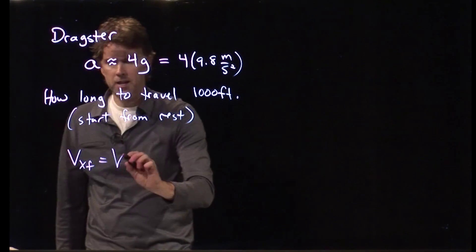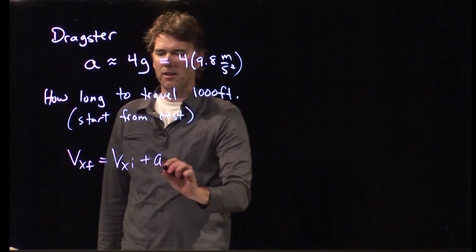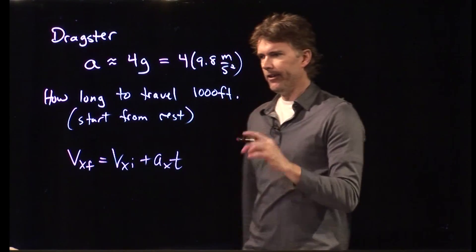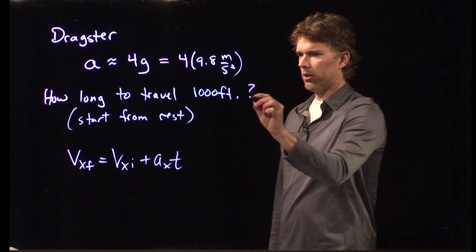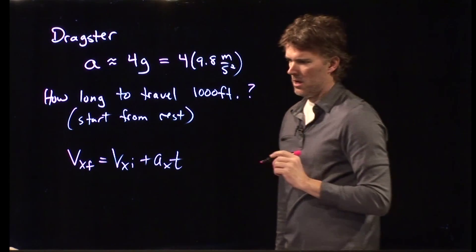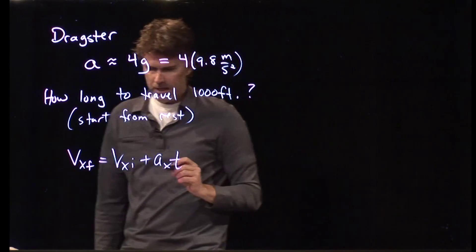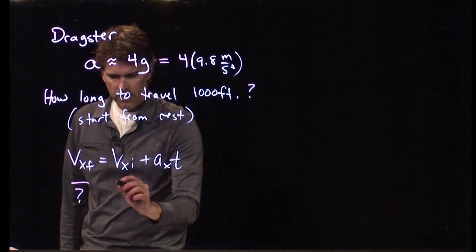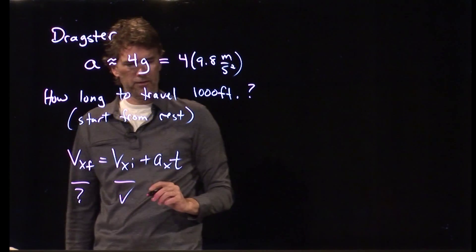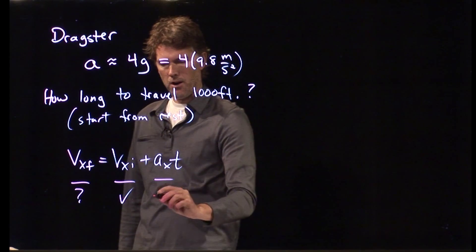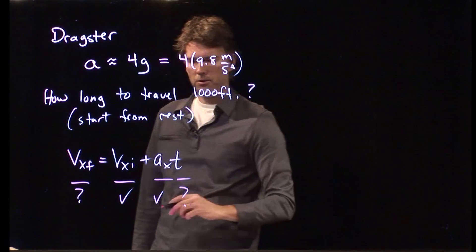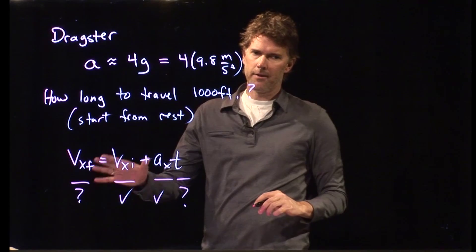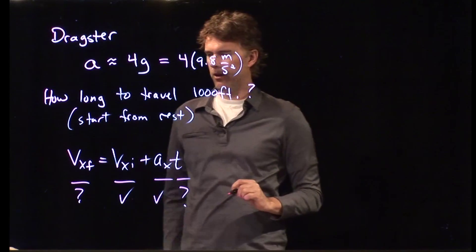One of them we said was this: Vx final equals vx initial plus a sub x times t. Is that going to help us get to the time? No, not yet, because we don't know that. This we know, it starts from rest, that's zero. This we know, it's 4g. But that guy we don't know either. So we only have one equation and we have two unknowns, and that's not going to help us do it.